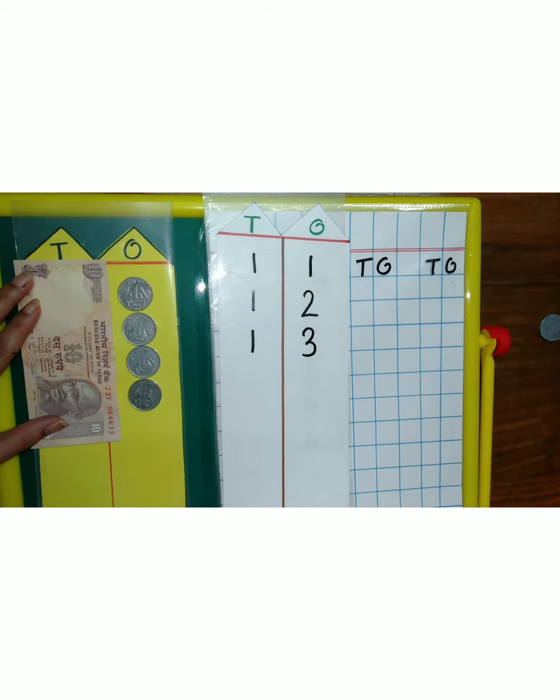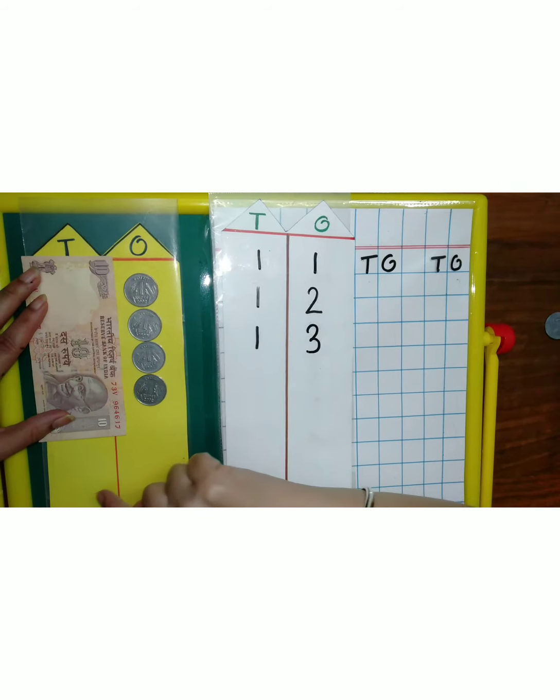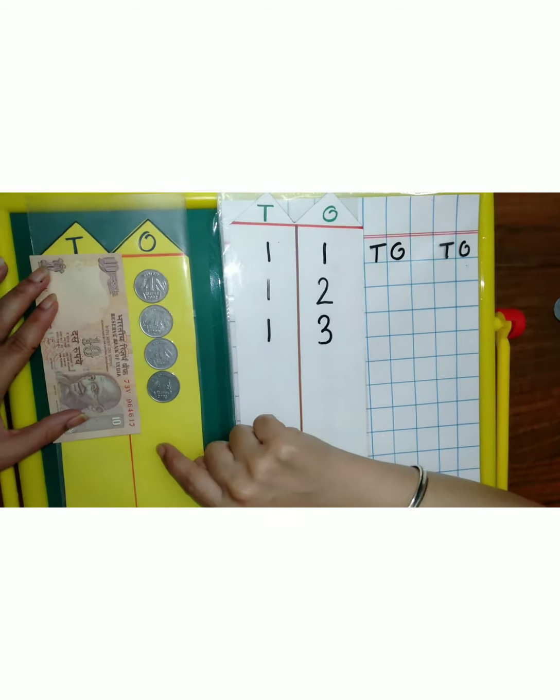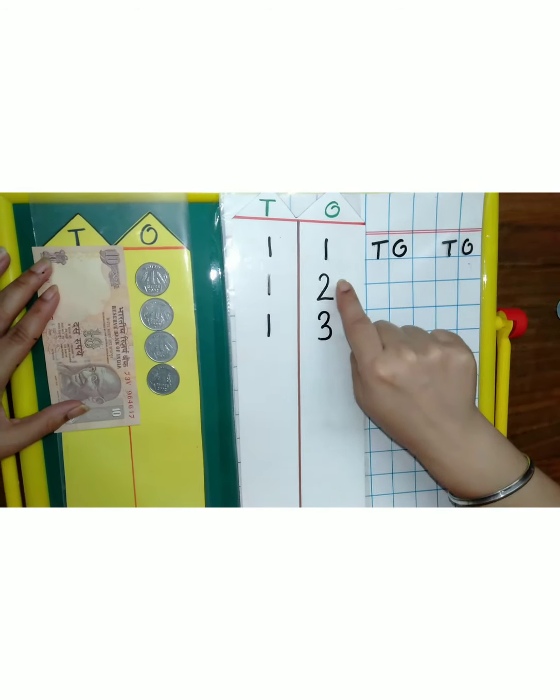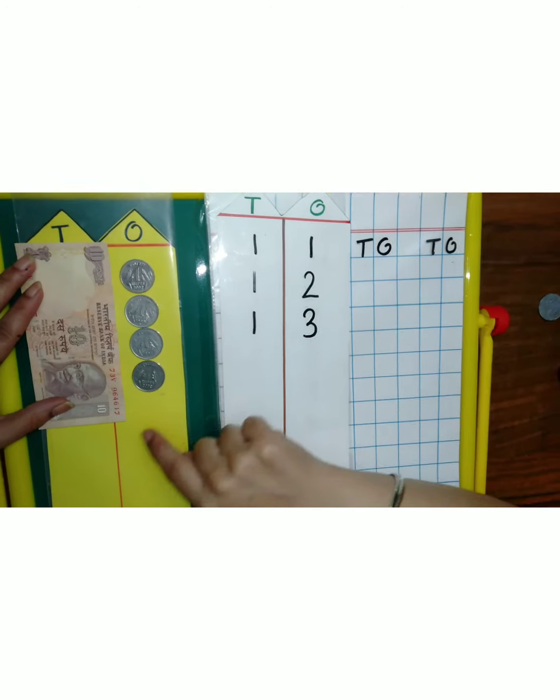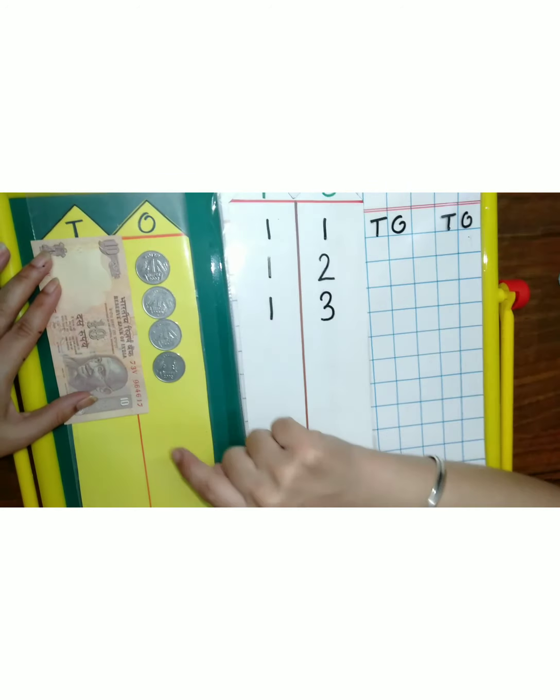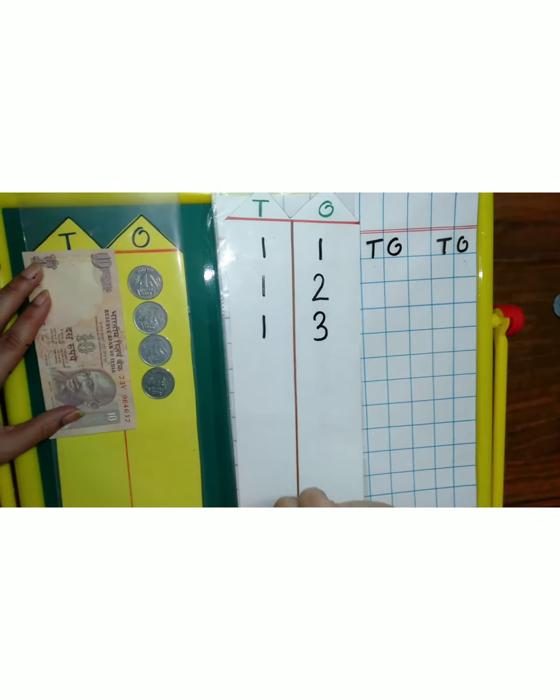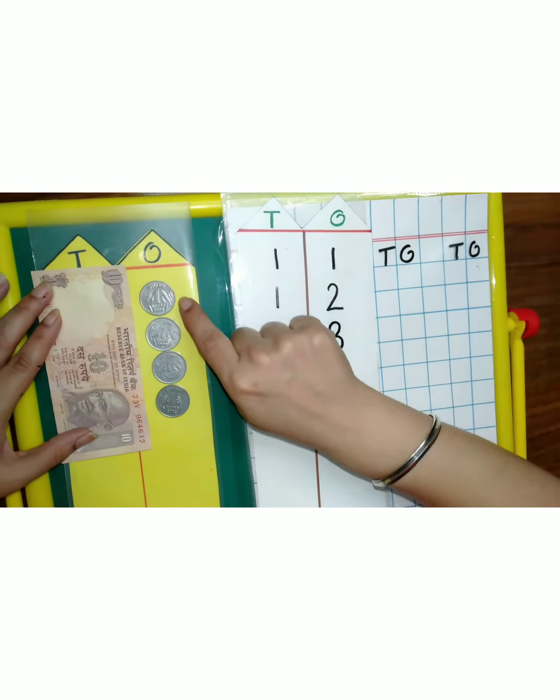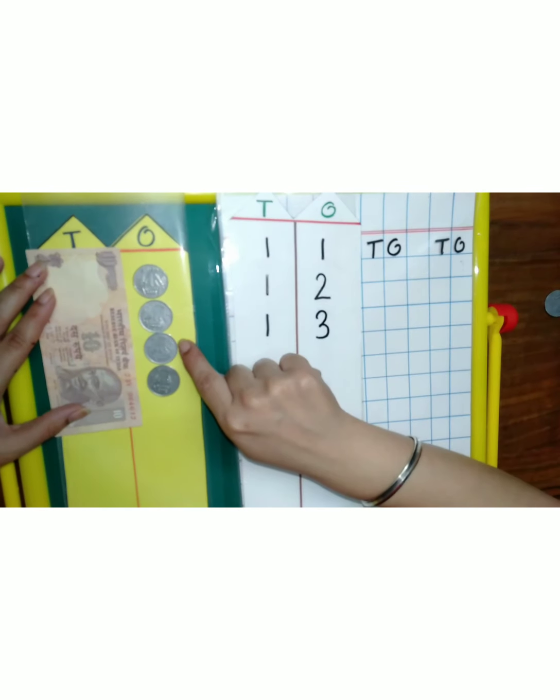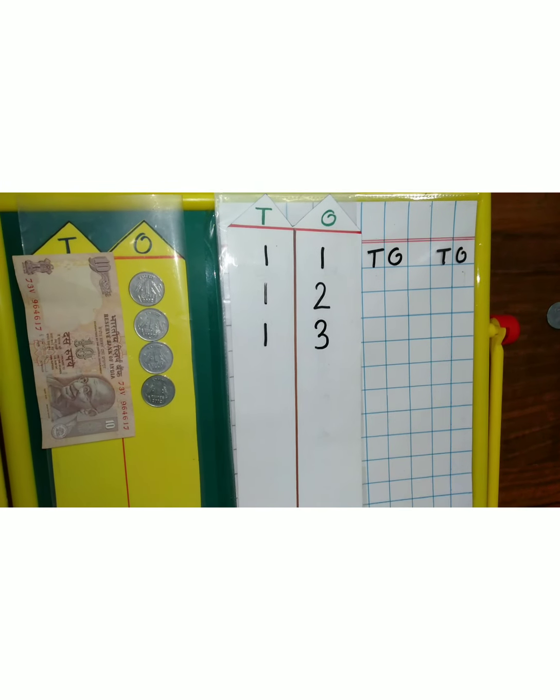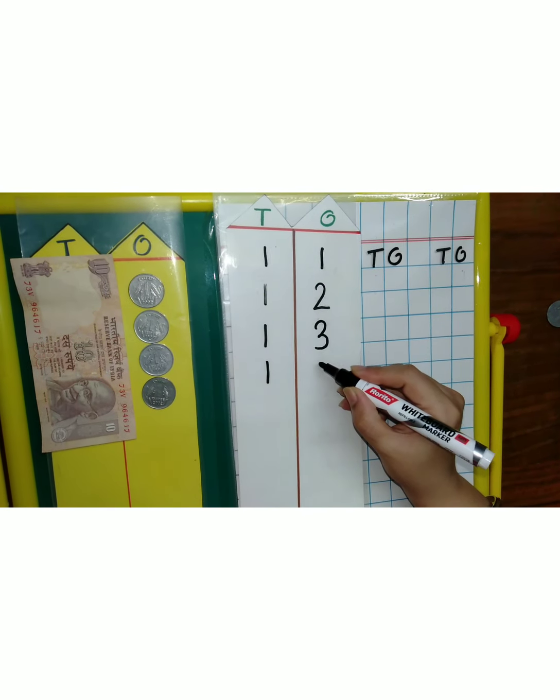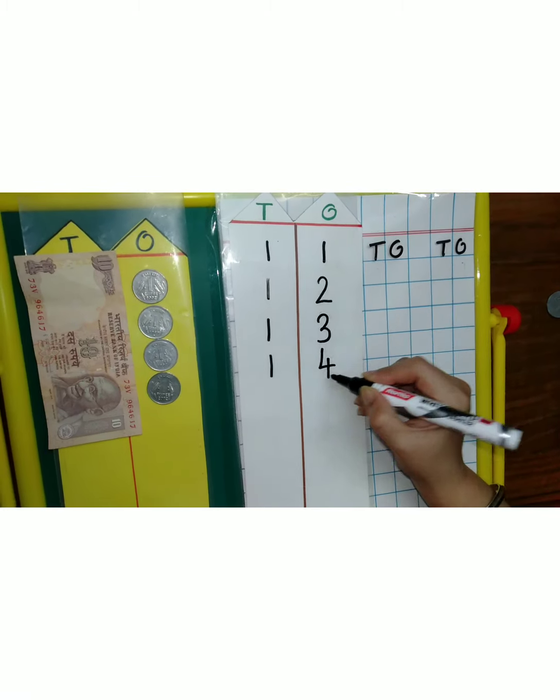So let's count my children. One tan, one extra eleven. One tan, two extra twelve. One tan, three extra thirteen. One tan and one, two, three, four extra. So how many? One tan, four extra fourteen.